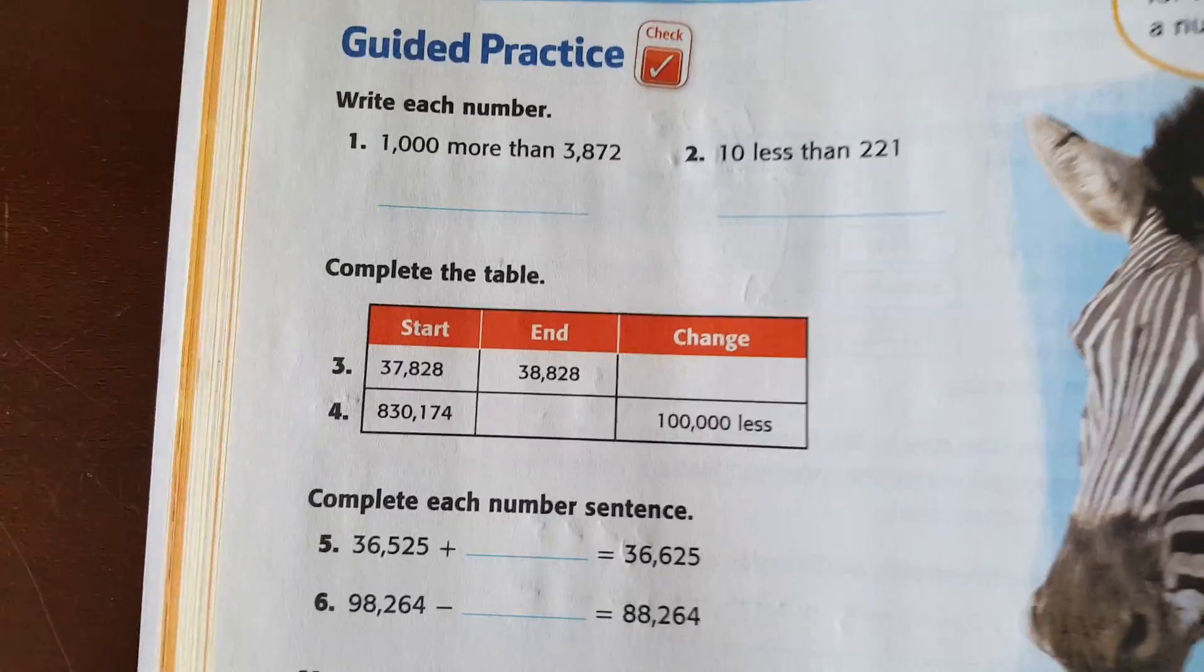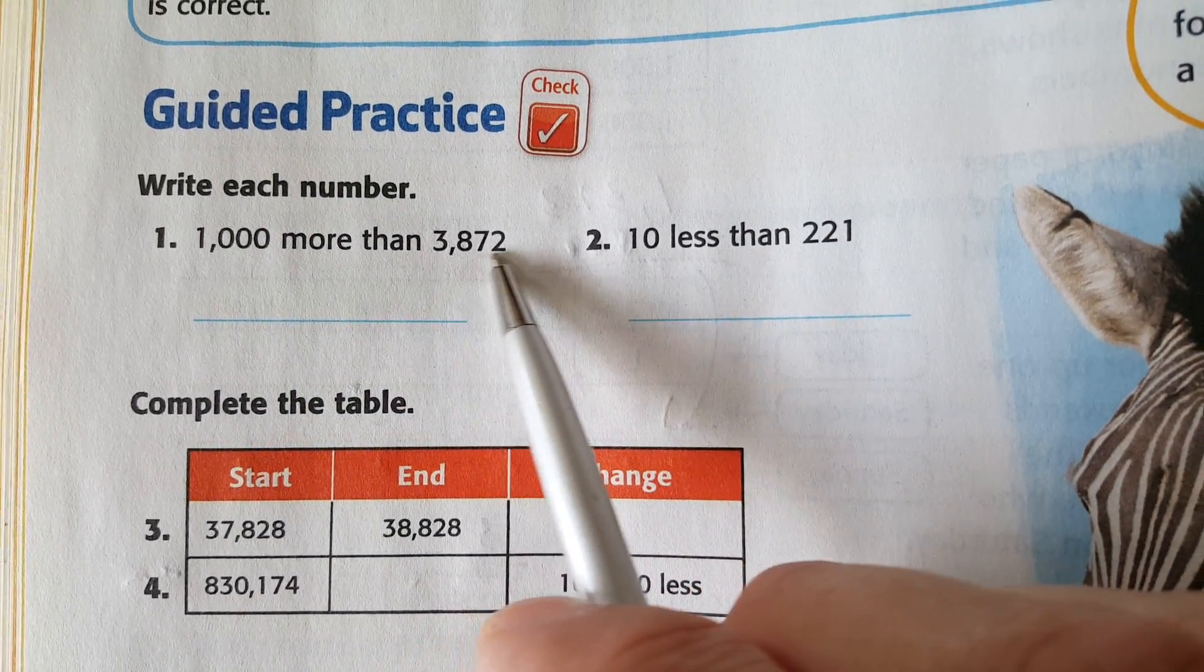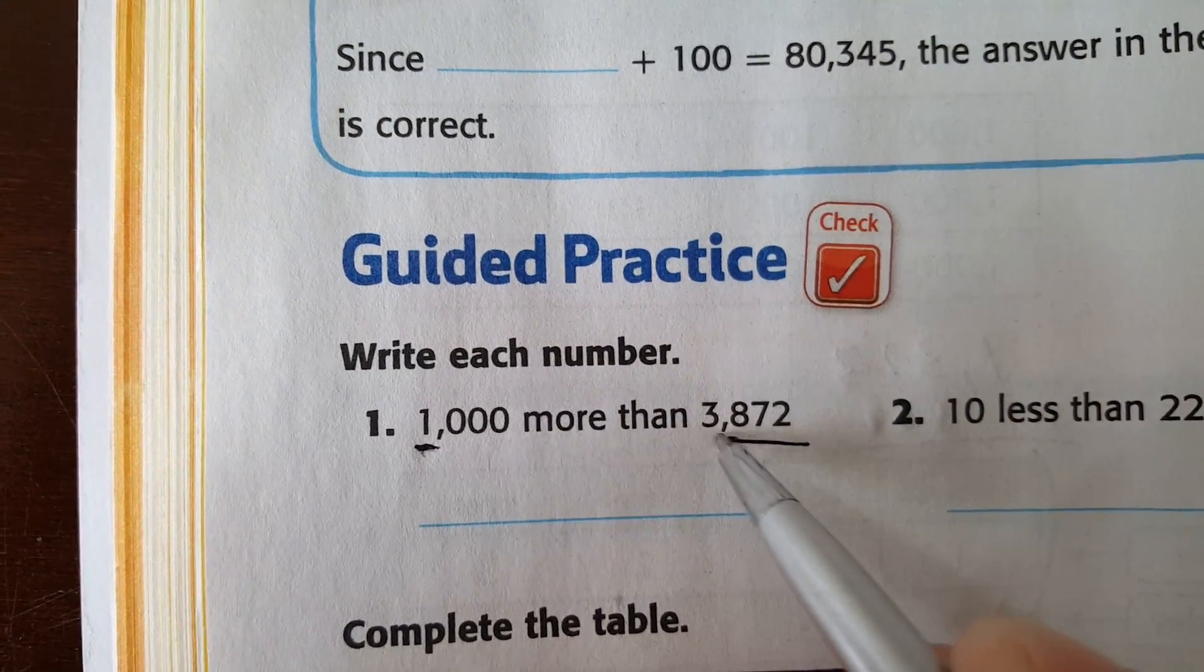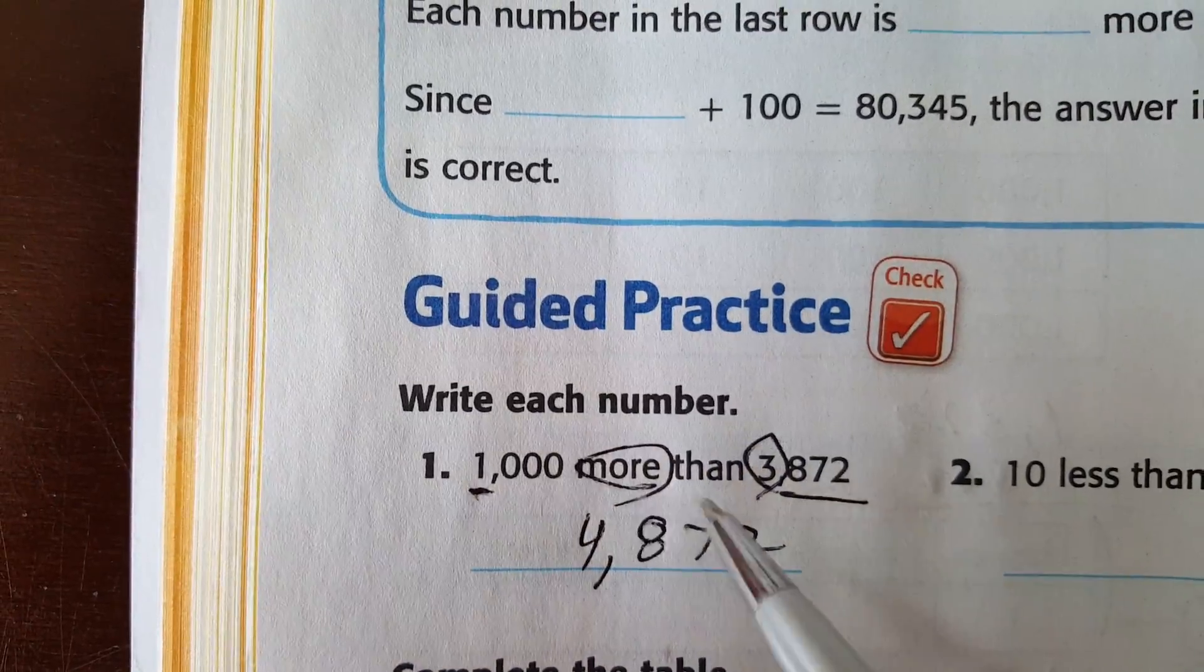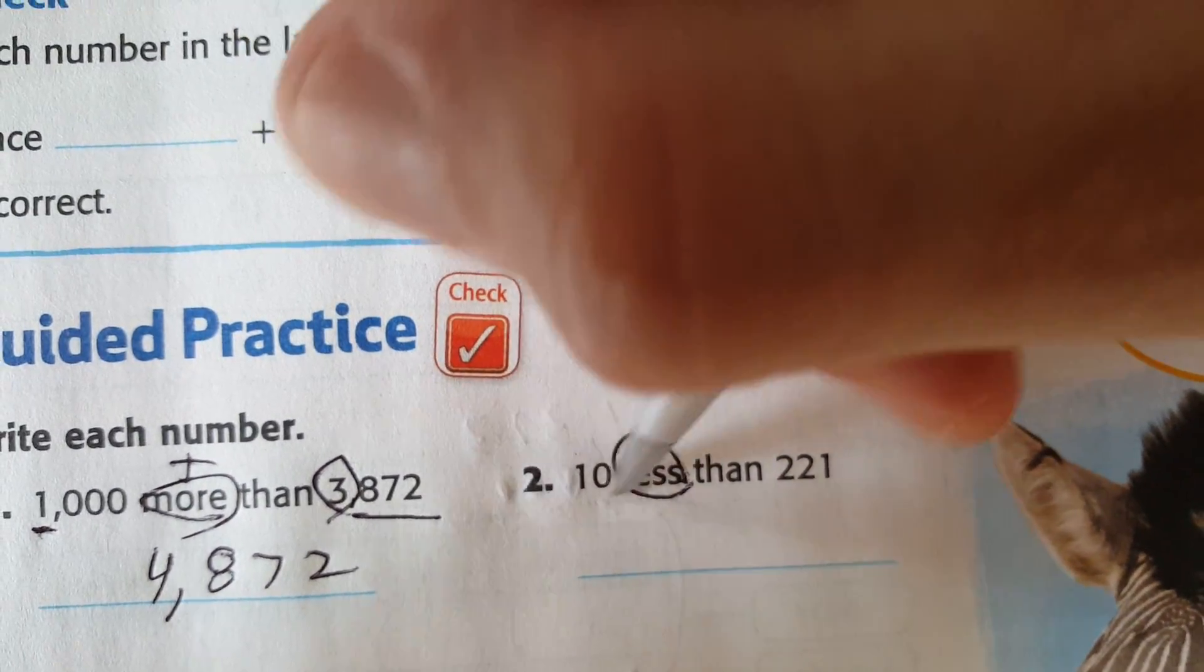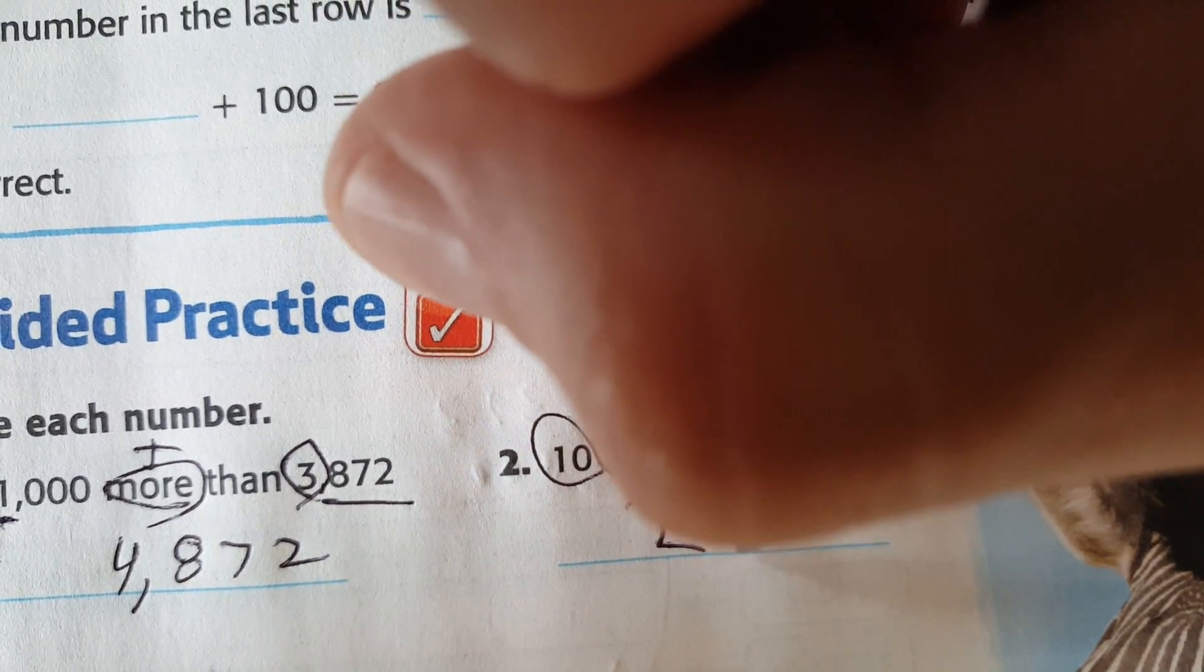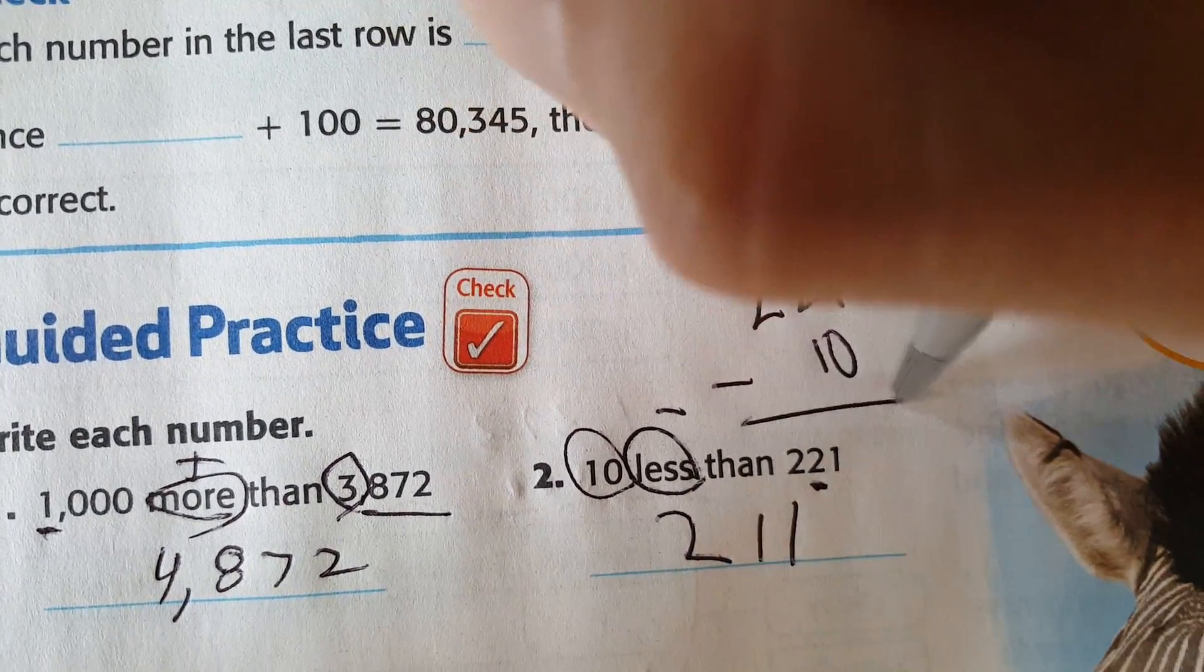Skip that. Boring. Guided practice. So you can see the problems like this. 1,000 more than 3,872. Notice how it's in the thousands place. None of these digits change. Just this one, 4,872. Keyword is more. So you add. This one, keyword is less. So you subtract. Notice how it's 10. So you're looking at the tens place. So it would be 211 because 2,21 minus 10 equals that. So this should be mental math.